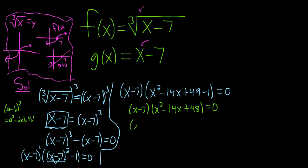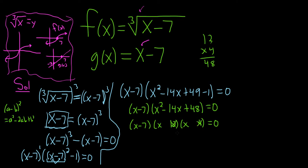This should factor. We need two numbers that multiply to 48 and add to negative 14. 12 times 4 is 48, but 12 and 4 don't add to negative 14, so that won't work. How about 6 times 8? That's also 48, and negative 6 plus negative 8 is negative 14 — that works. So this factors as (x minus 6)(x minus 8) equals 0.